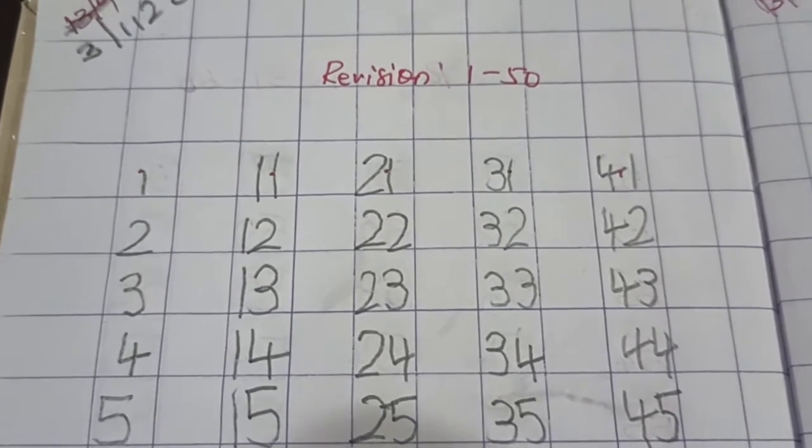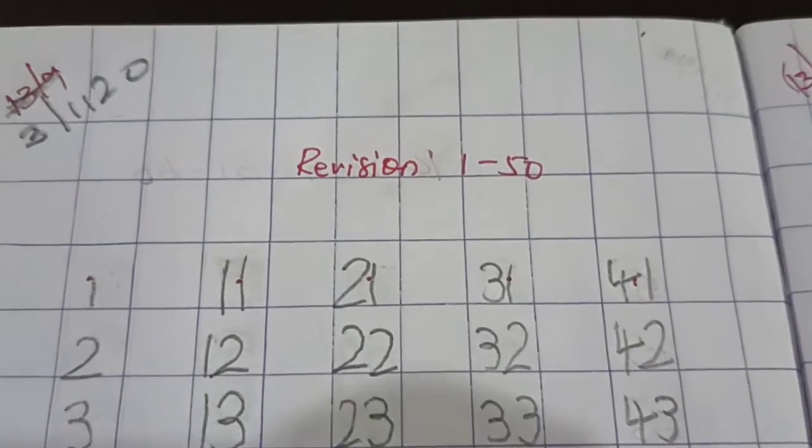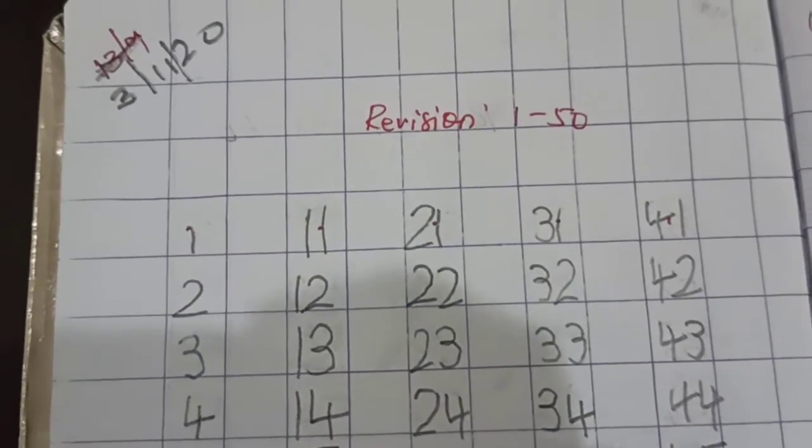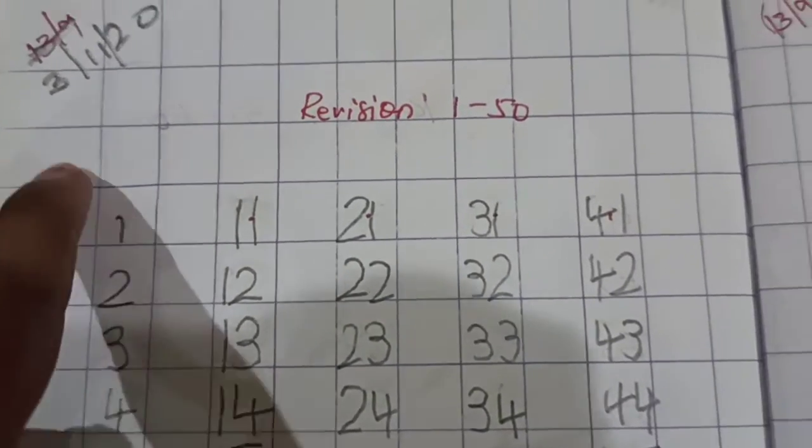Okay, classwork, math classwork and math homework book. Write today's date 3-11-20. Okay, 3-11-20.